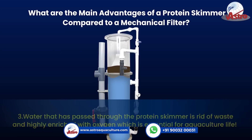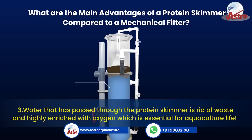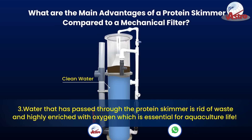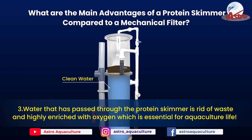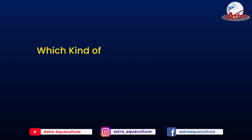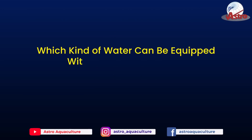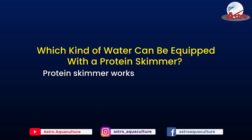Three, water that has passed through the protein skimmer is rid of waste and highly enriched with oxygen, which is essential for aquaculture life. Which kind of water can be equipped with a protein skimmer?